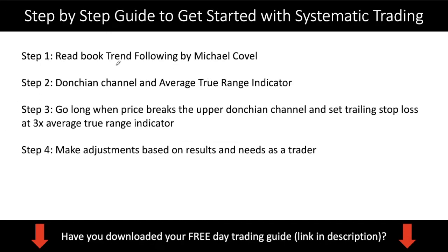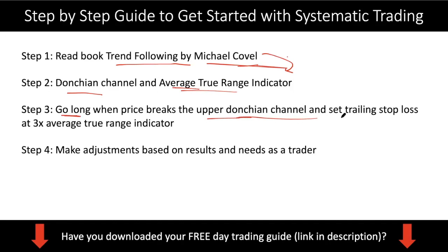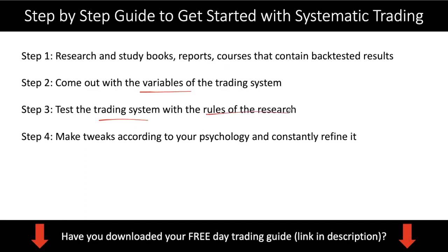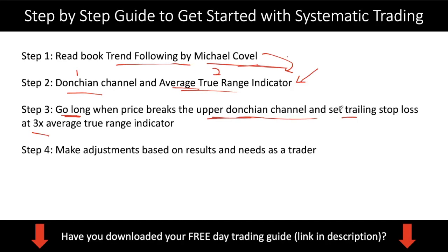Here is a guide on how to do it — this is just an example, please do not take this as a trading strategy. Let's say step one you read a book: one of the famous books I read many years ago is called 'Trend Following' by Michael Covel — it's a very good book that gives you an introduction about how to do trend following. Let's say this book tells you that you can use a trading strategy with the Donchian channel and the average true range indicator, and the system says go long when price breaks above the upper Donchian channel and set stop loss at a specific level. So those are your variables — variable one, variable two — and the settings. Then you test the trading system with those rules: go long when this happens and set your stop loss at this level. Backtest it and see whether it works.